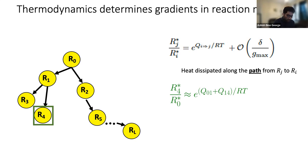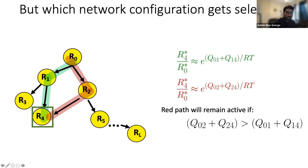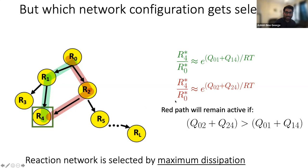We can generalize this to an arbitrary tree-like network where the ratio of two resources is determined by the heat dissipated along the path in the network. For example, the ratio of concentration of R4 to R0 is determined by the heat dissipated in reactions R0→R1 and R1→R4. To understand what network is selected by ecological competition, we compare two possible paths to the same resource. These two paths give different ratios and cannot coexist simultaneously, so only one can carry non-zero flux. In particular, the path with greater heat dissipated along it remains active — in other words, the reaction network of the community is selected by the principle of maximum heat dissipation.